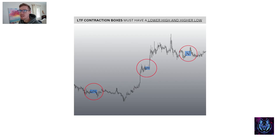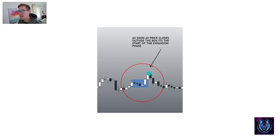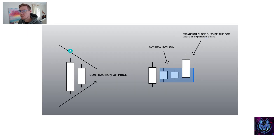Lower time frame contraction boxes must contain a lower high and a simultaneous higher low. We mark them off, and as soon as price closes outside of the box, we know it's entering the expansion phase. This is why it is a leading indication — it lets us know that what's coming next is volatility into the market. Price goes into contraction, we get a lower high and higher low, we put a box around it, and we wait for price to break out, signaling that we are entering the expansion phase.